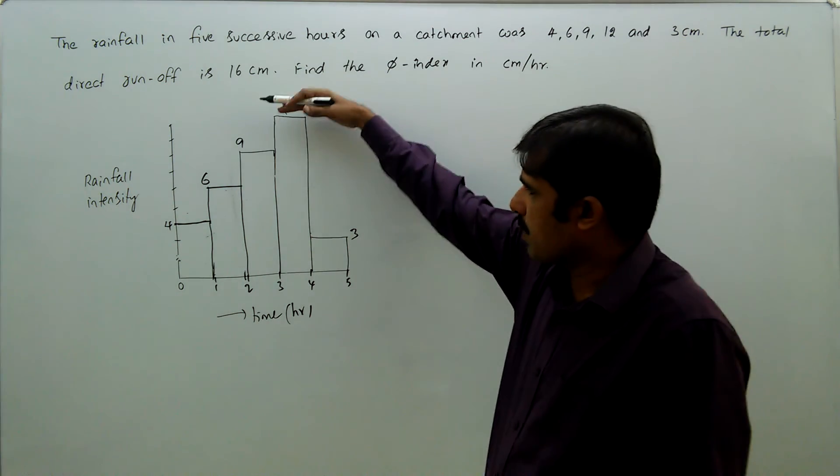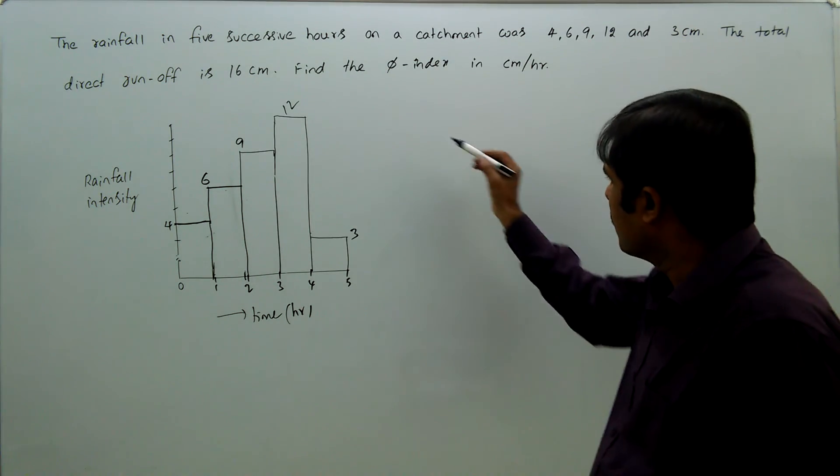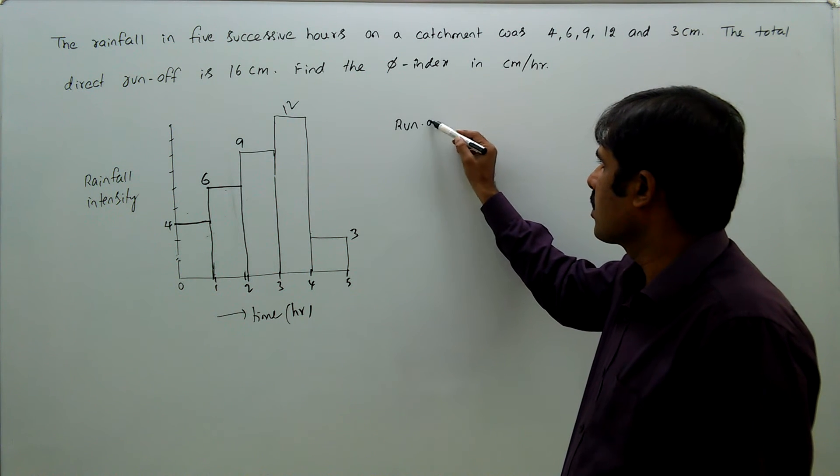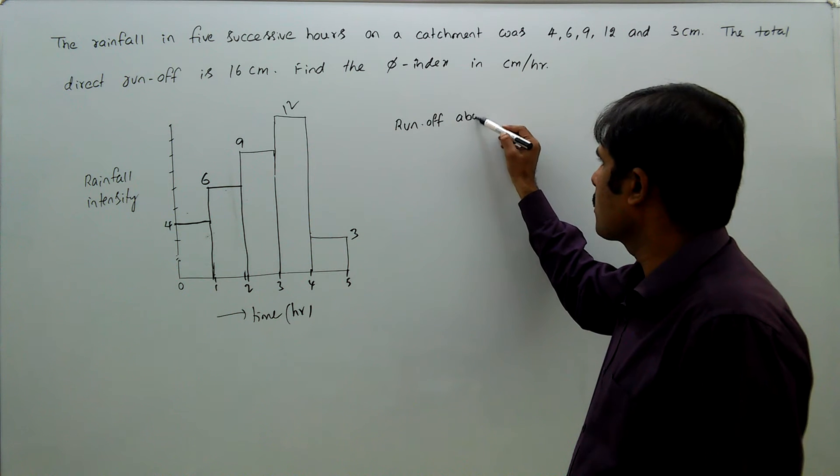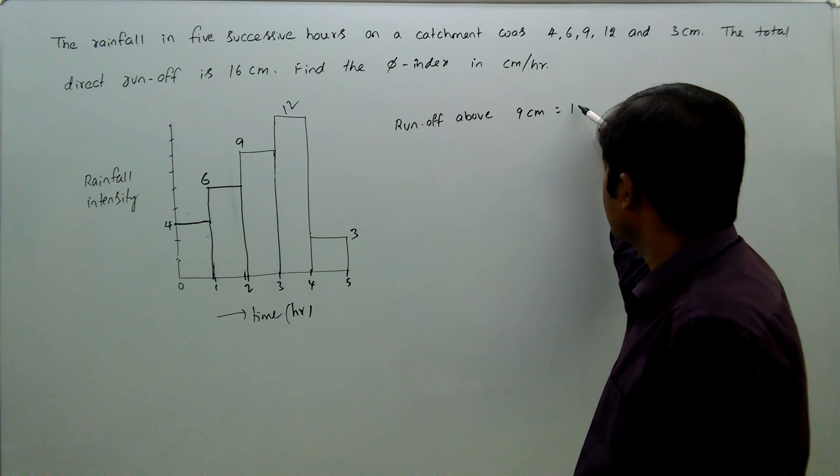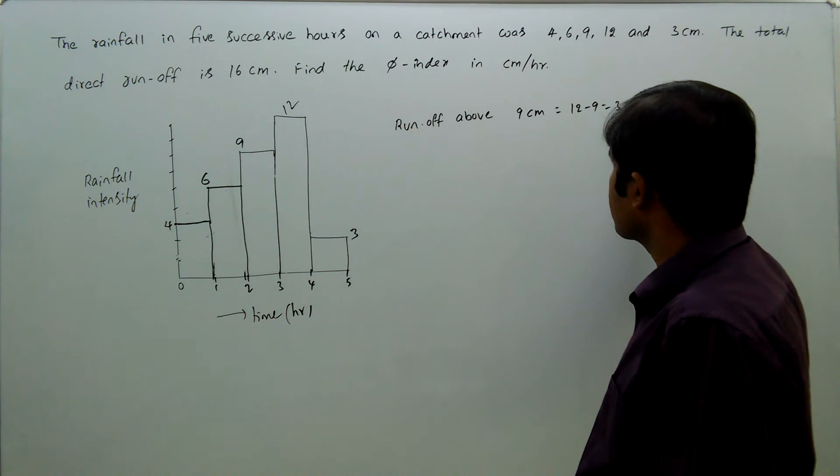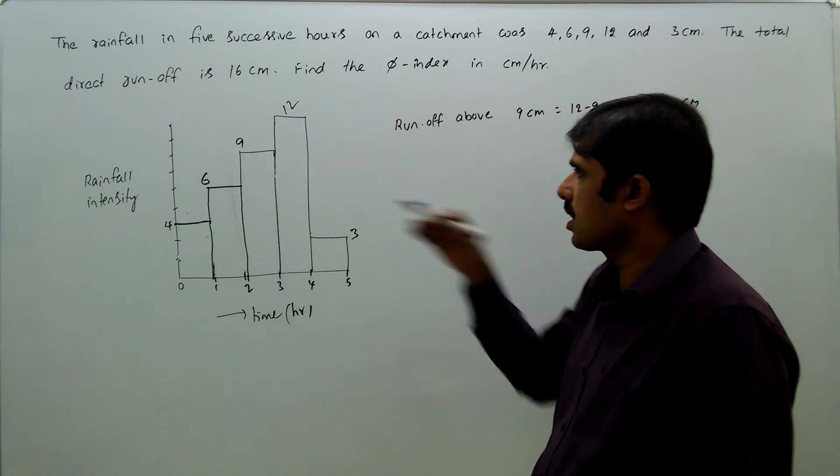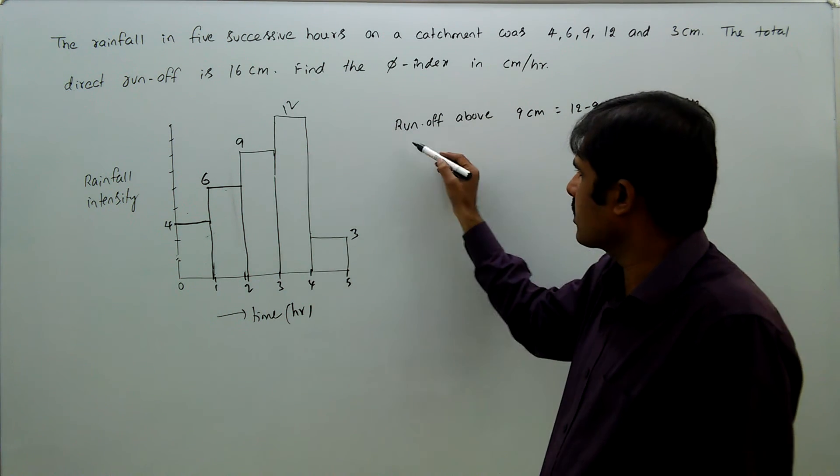First one, check from top to bottom. What is the runoff above 9 cm level? That equals 12 minus 9, 3 cm. That is less than 16 cm. That means we need to go to a still lower level.